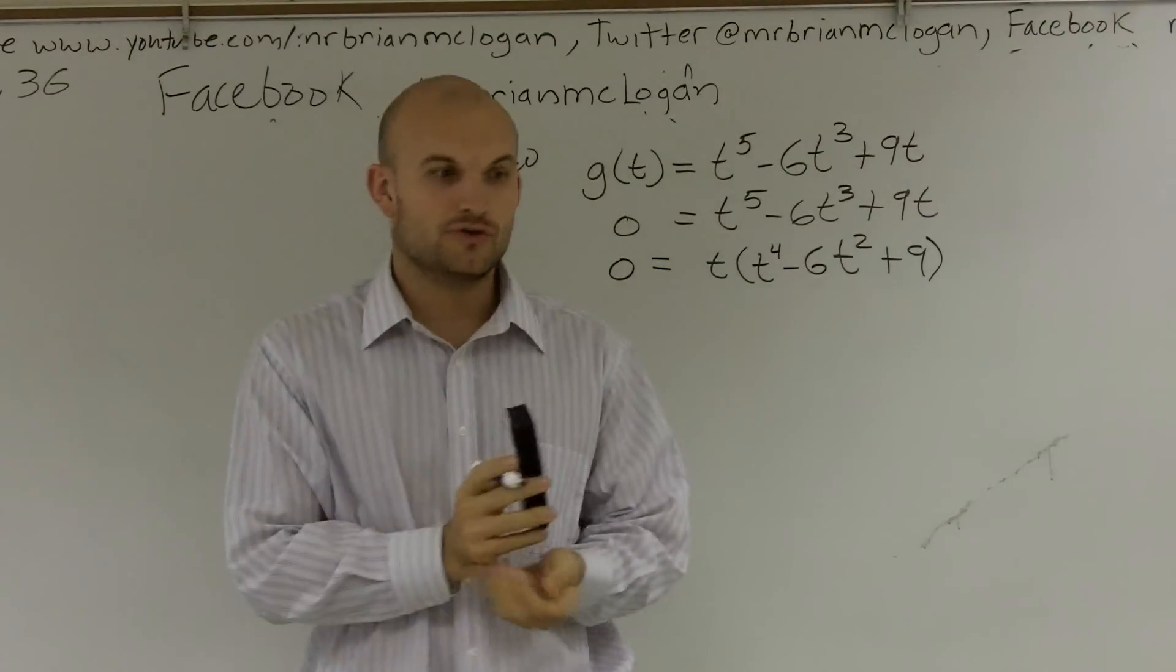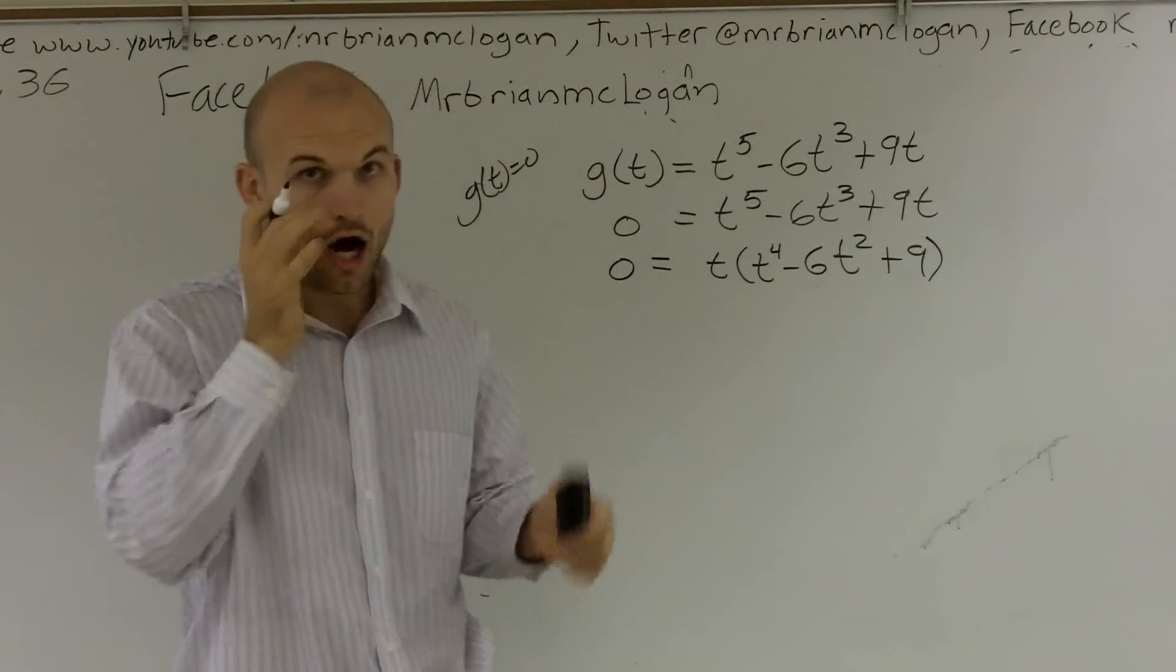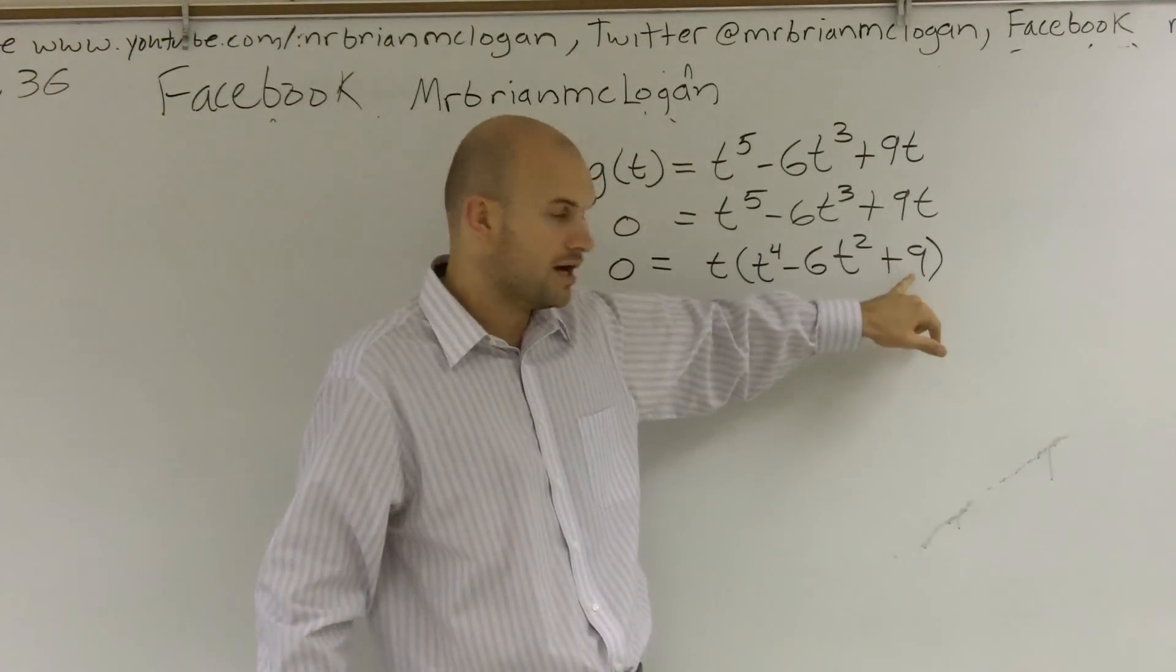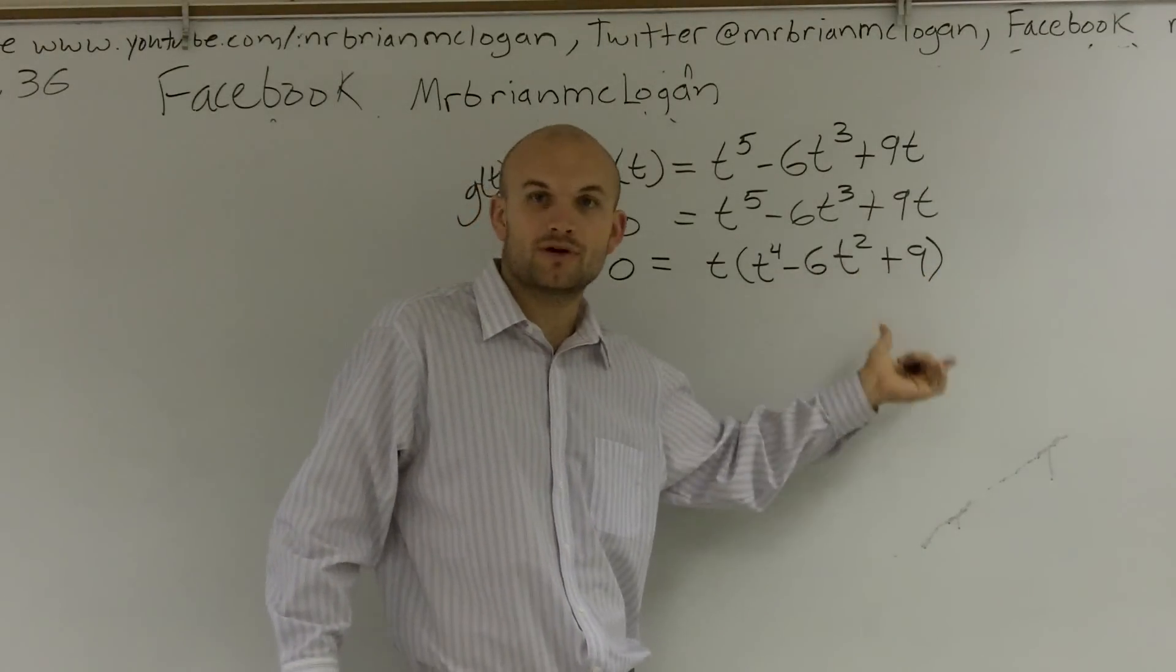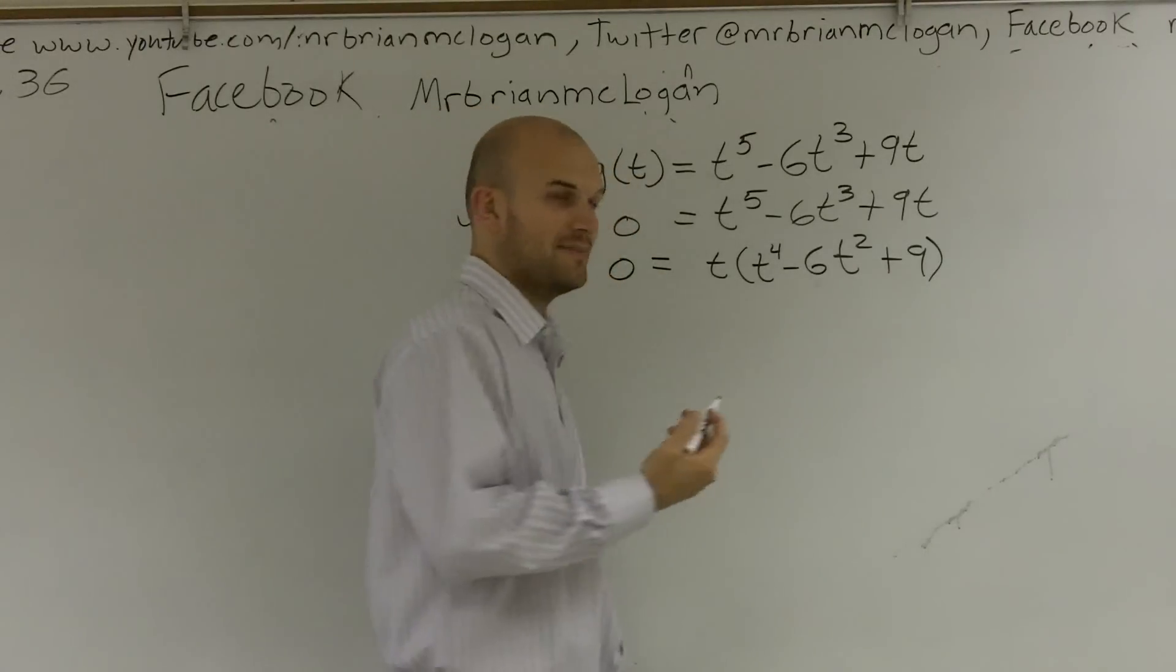you can look for a perfect square. You can look for a difference of two squares. Always look for these things when you see a square number. And what we have is we actually are going to be able to create a perfect square. So what does that mean? Well,